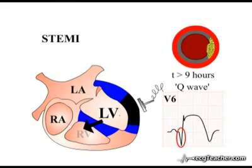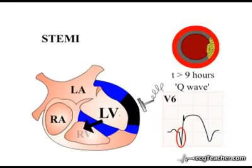As a rule of thumb, the pathological Q wave tends to be deeper than two small squares and greater than one small square in duration. A more precise definition of pathological Q waves will be given in the quiz section.